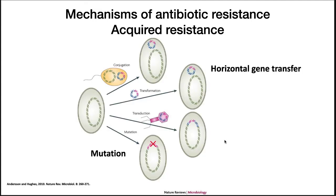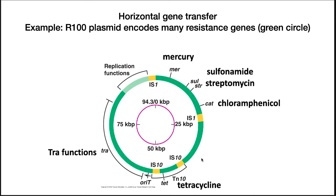Another problem is acquired resistance. This can happen via horizontal gene transfer — conjugation, transformation, or transduction — or by mutation of the organism. An example is the R100 plasmid that spreads in gram-negative bacteria. This plasmid of around 100 KB has resistances to mercury, sulfanilamide, streptomycin, chloramphenicol, and tetracycline. As this plasmid spreads through the population, it makes the organism resistant to these drugs.